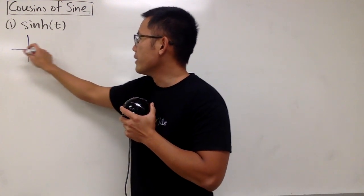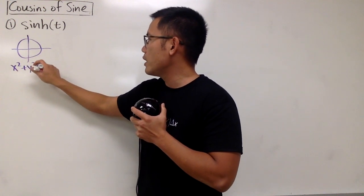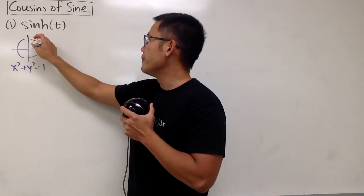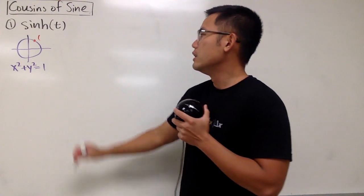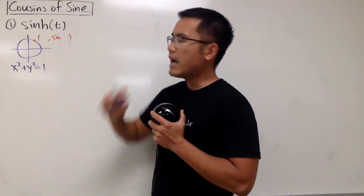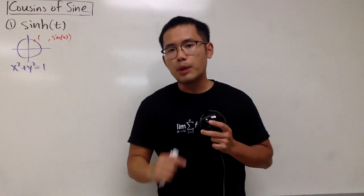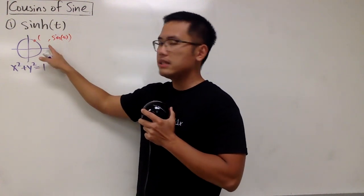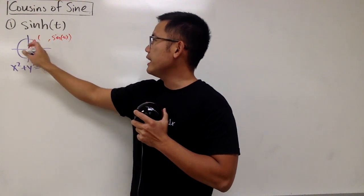Let me put down the circle here. The equation of the unit circle is x squared plus y squared equals 1. If we have a point on the unit circle, the x-coordinate is the cosine value and the y-coordinate is the sine value. If we have sine of t, we can interpret t in this picture two ways. The first way is you look at the angle from the positive x-axis to this ray — if you connect the origin to the point, this angle is t. Make sure you're in radians.